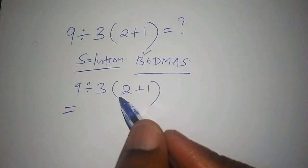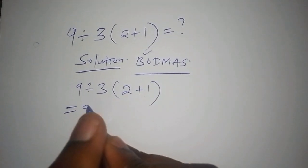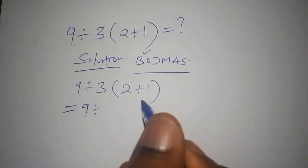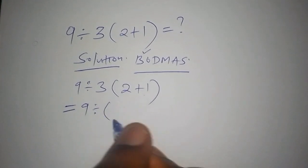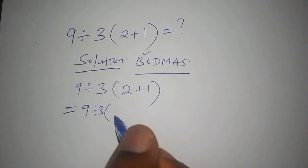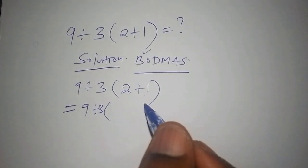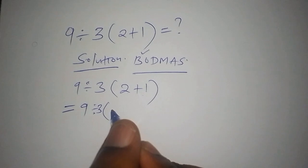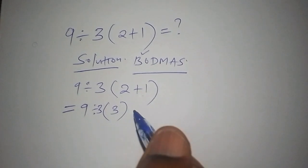We're going to work out the number inside the bracket. So we shall have 9 divided by 3 into bracket 2 plus 1, and 2 plus 1 is 3. Then we close the bracket.